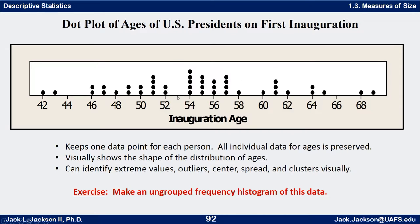Now what can we identify from this? We can identify at least the age of the youngest one and the age of the oldest one — all of them were between 42 and 69. We can find the ages of every single one — not who they are, but how many of every particular age — and we can also see something about how they're spread out, whether we have any clumps or clusters, or whether it's mounted up in the middle. This one is kind of mounted up in the middle and extends out on the edges a little bit.